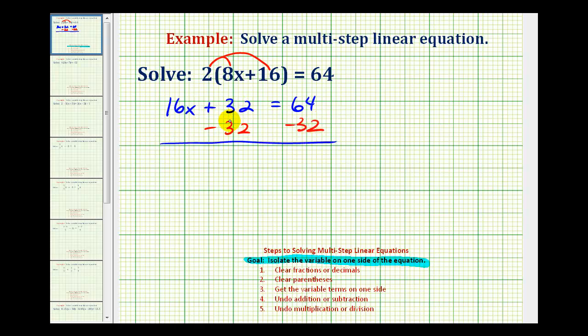Notice that plus 32 minus 32 would be zero, so we're left with 16x, bring down the equal sign, and 64 minus 32 is equal to 32.